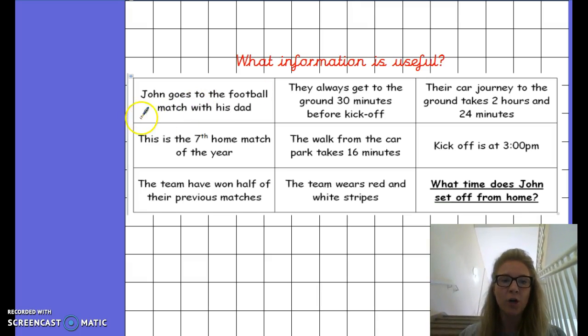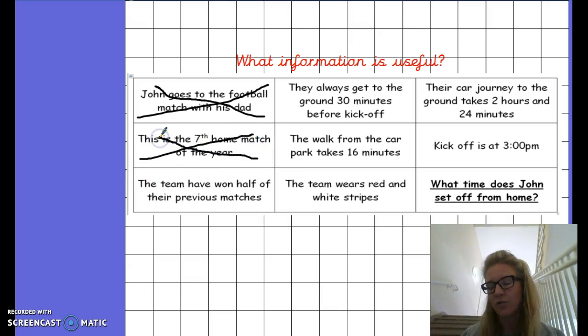So, for example, John goes to the football match with his dad. That is not going to help us solve the problem. This is the seventh home match of the year. That information isn't useful either, so we don't need to use that when thinking about solving our sum.